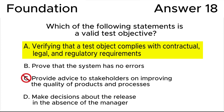Answer C is wrong because a Quality Assurance Engineer can provide advice to stakeholders on improving the quality of products and processes, but this statement doesn't relate to test objectives.